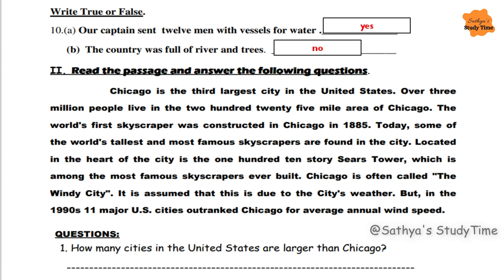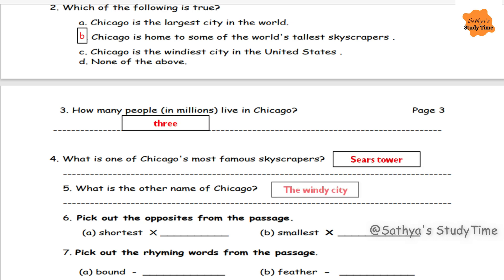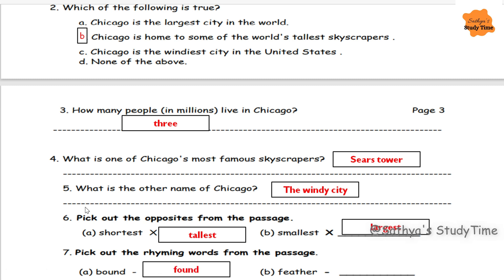Next you can see another passage about Chicago. Just pause the video and answer the questions. Question 6: pick out the opposites from the passage — shortest/tallest, smallest/largest, bound/found, feather/feather.